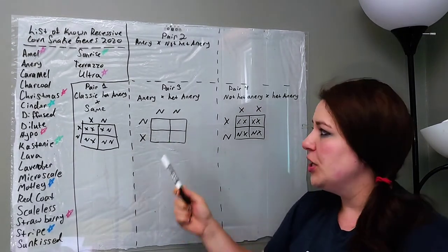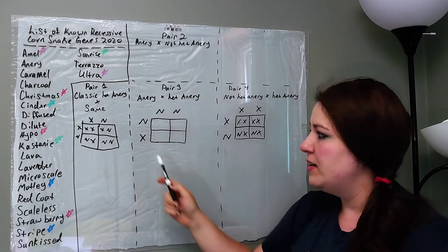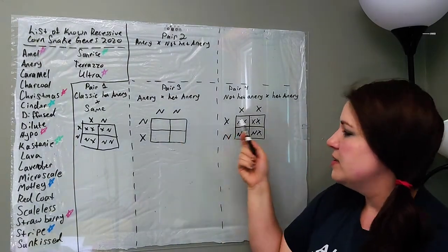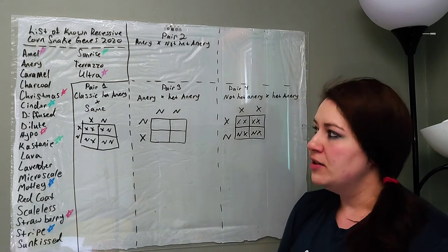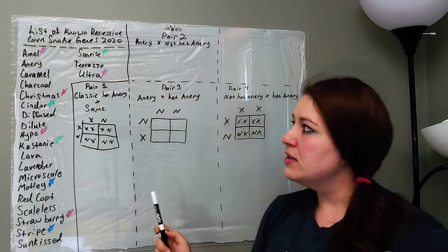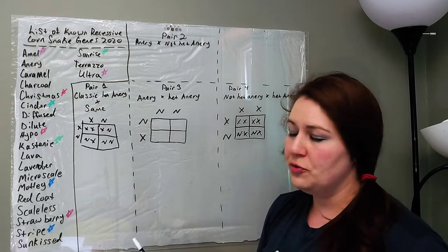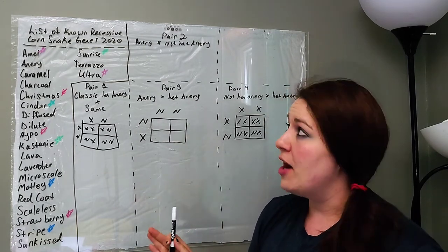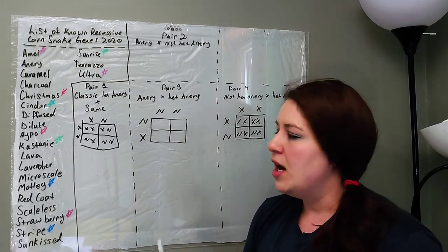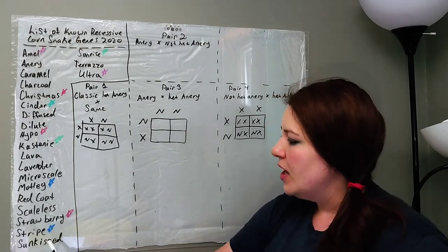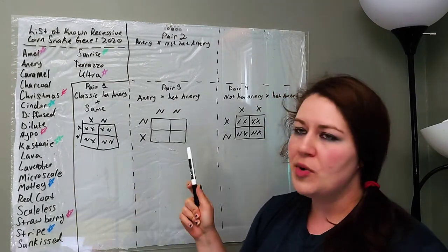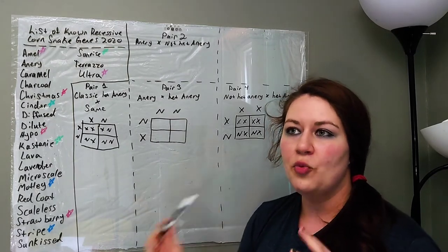And remember, it's the same thing here. Anery is the N, and the Xs in these stand for there not being the anery gene on that side. So, I did make the list of all the different recessive genes in corn snakes that are at least known right now as of 2020. I believe this is July 15th, 2020. And I went ahead and put stars next to the ones that do work together.